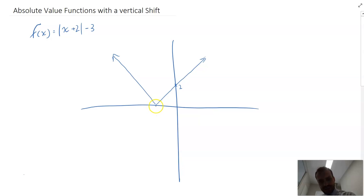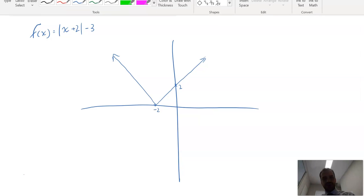Because it's a 45-degree angle there, we can say that that is negative 2 there. But what about this negative 3 here, and what does that do? Well, the negative 3 acts as a vertical shift, and it's going to move our entire function down by 3.